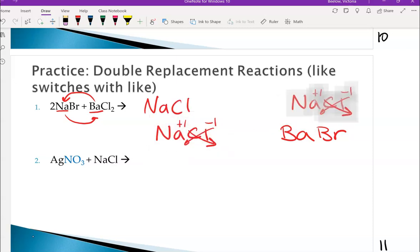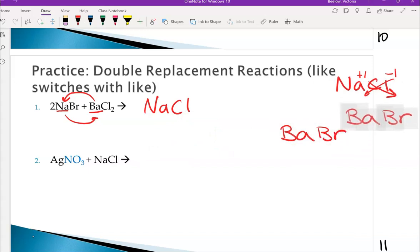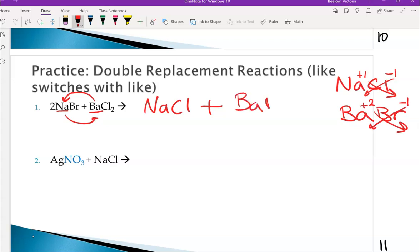I'm going to move these off to the side here just to make more space. Plus, Ba and Br are together. Ba has a charge of plus two, and Br has a charge of minus one. So when we do the crisscross, we're going to get BaBr2.